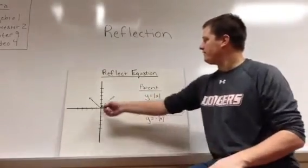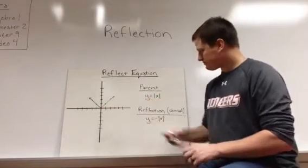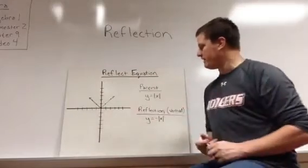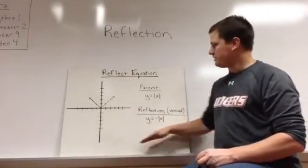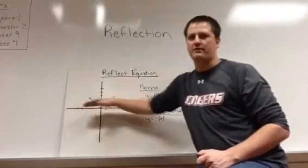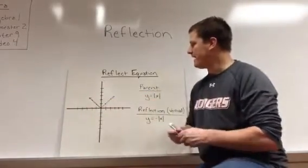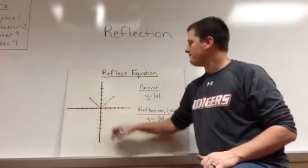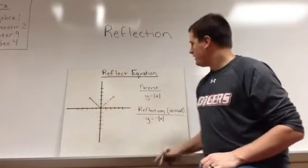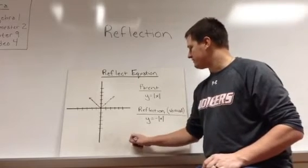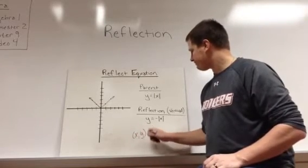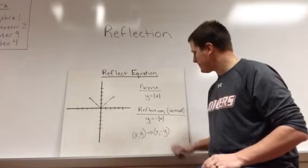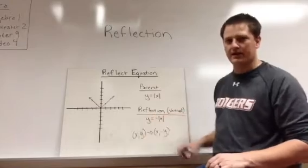the absolute value of x. So we've got 0, 0. We've got 1 gives us 1. Negative 1 gives us 1. And we create this v. The vertical reflection, we would put a mirror right on this x-axis and flip everything down. So 0, 0, since it's right on the mirror, is going to stay right there. Our 1, 1, if you remember, vertical reflection said x, y became x, negative y.